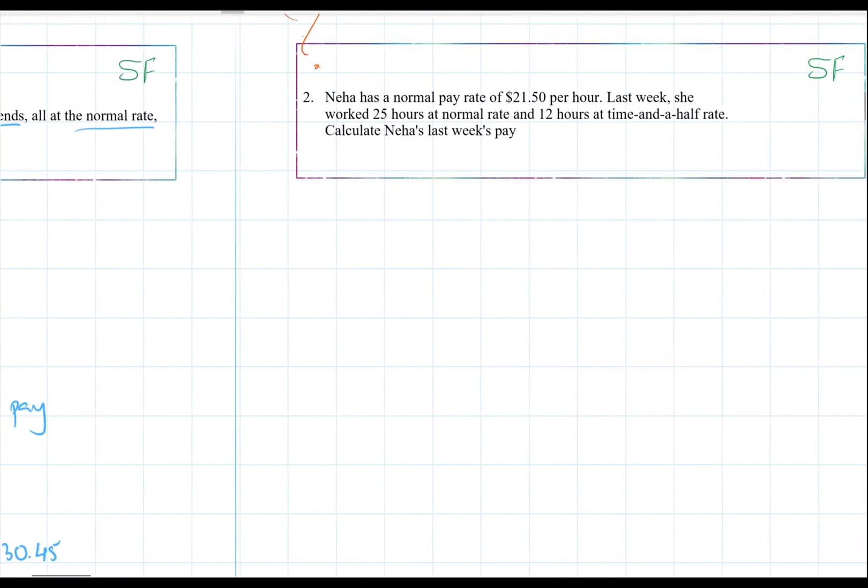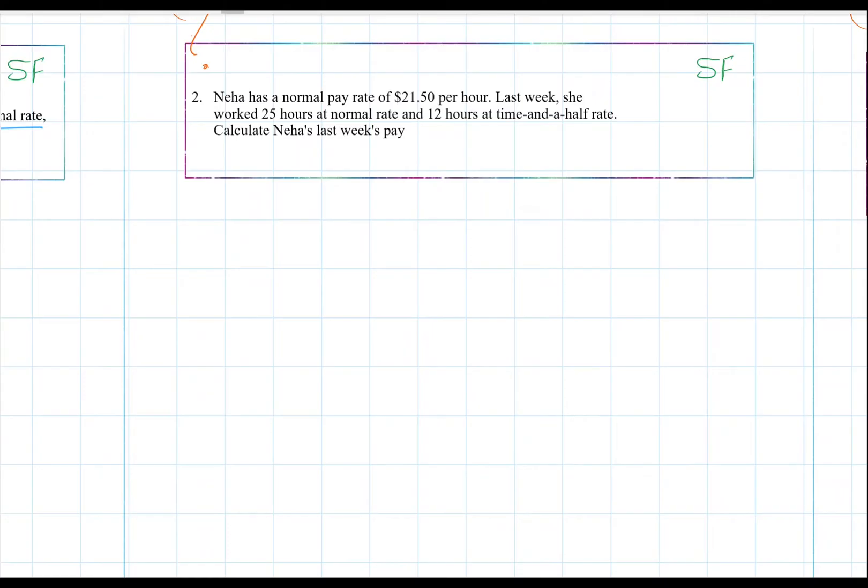Okay, let's look at another question. Neha has a normal pay rate of $21.50 per hour. Last week, she worked 25 hours at normal rate and 12 hours at time and a half rate. Calculate Neha's last week's pay.